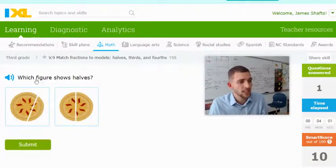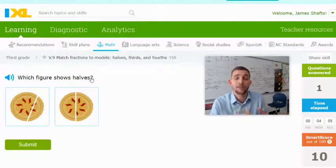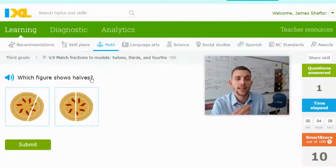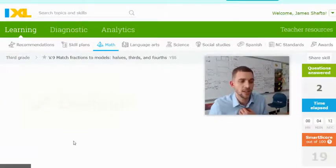This next one, which figure shows halves. Again, half means out of two, and they need to be equal pieces, so the correct answer is here.